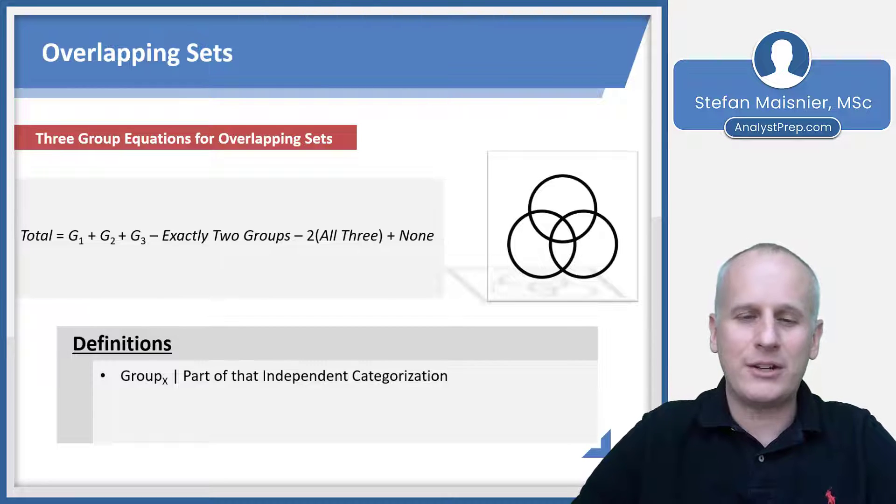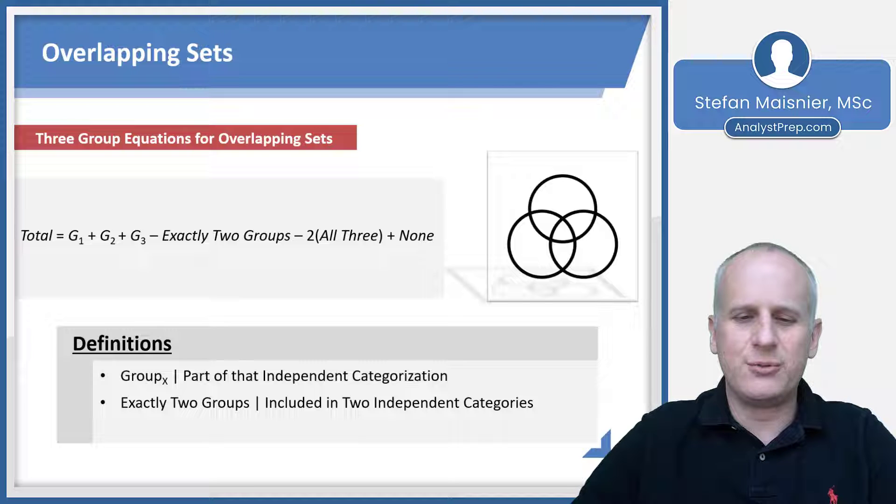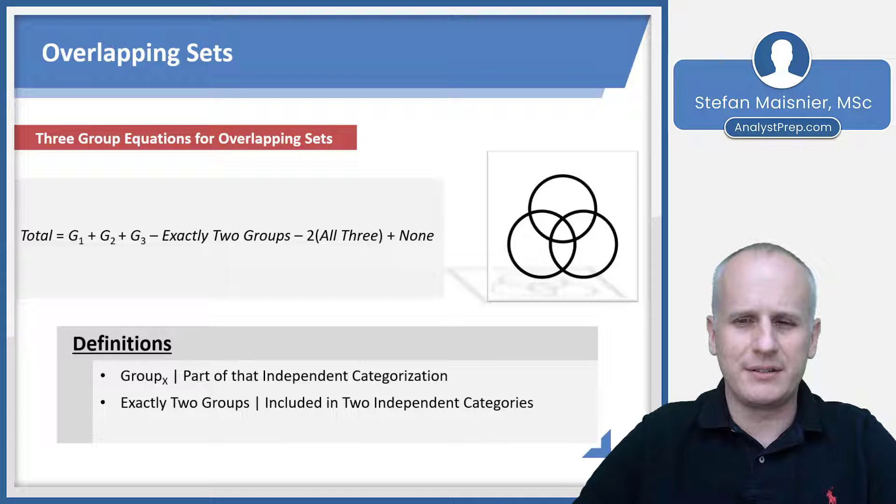That could also have somebody in two groups, or in all three groups. When we're talking about exactly two groups, that means an individual is included in two of the independent categories. You can see a relatively complex Venn diagram set up on the right-hand side of the screen. That would be like if you were in two of the circles, but not all three. And it could be a combination of group one and group three, group one and group two, or group two and group three. And you would be categorized as exactly two groups.